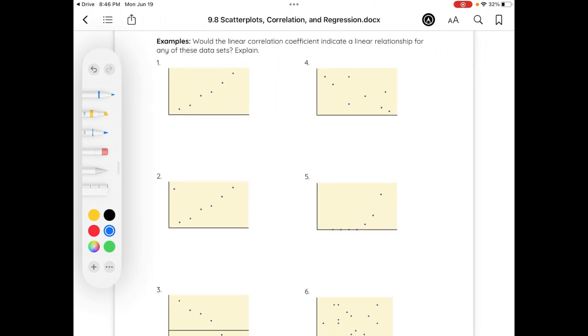Would the linear correlation coefficient indicate a linear relationship for any of these data sets? And then explain. This first one, if I were to draw kind of a line of best fit here, it does follow a linear pattern. So I would say yes, it's going in a linear, it's a positive linear, and I would even say positive strong linear direction or pattern.